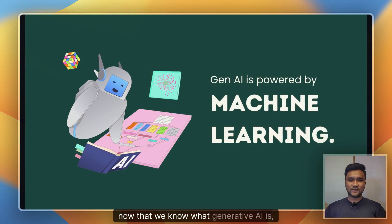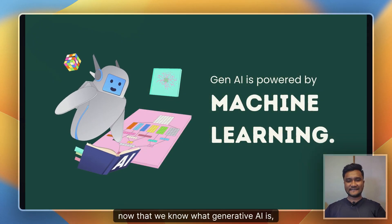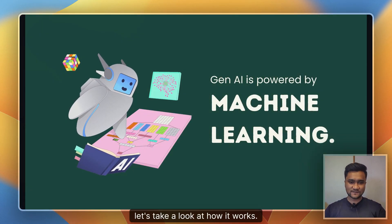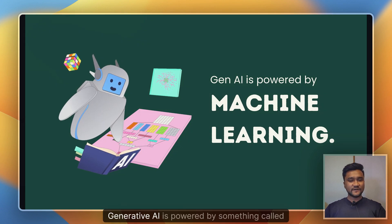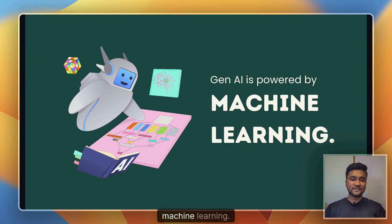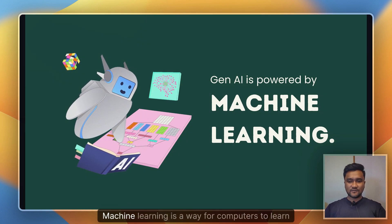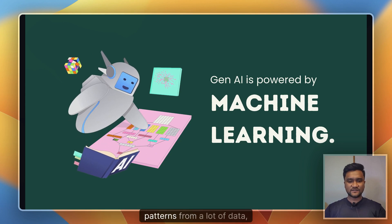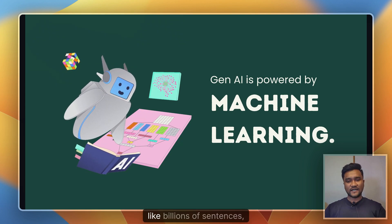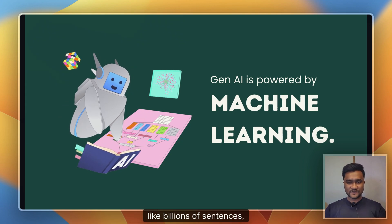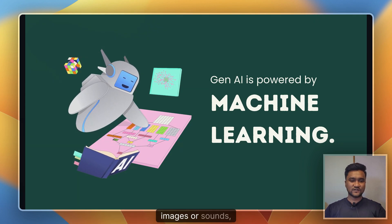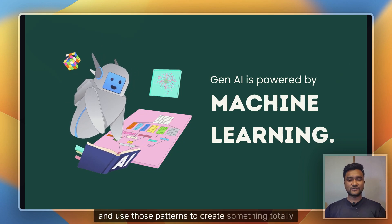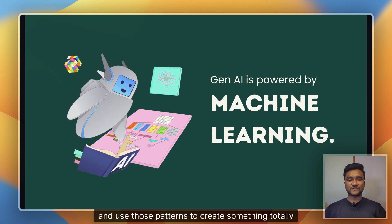Now that we know what generative AI is, let's take a look at how it works. Generative AI is powered by something called machine learning — a way for computers to learn patterns from a lot of data, like billions of sentences, images, or sounds, and use those patterns to create something totally new.